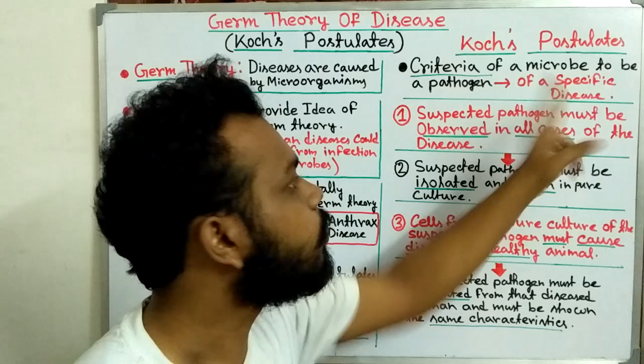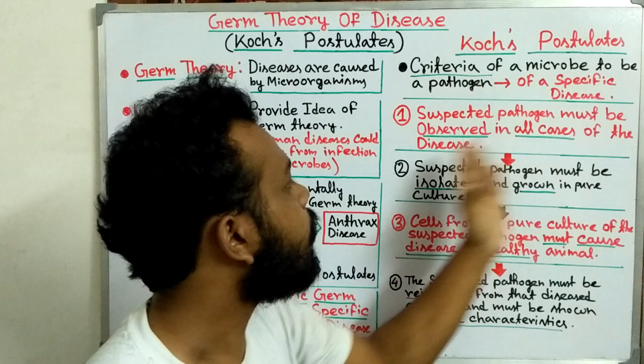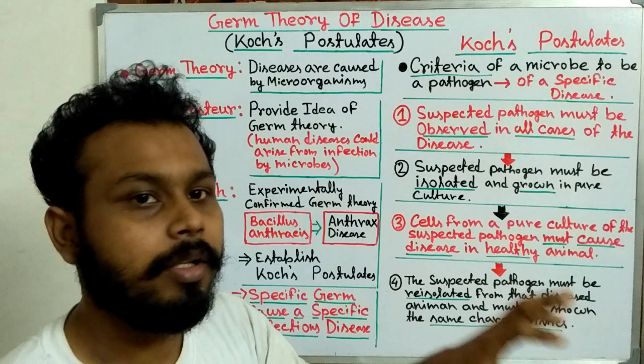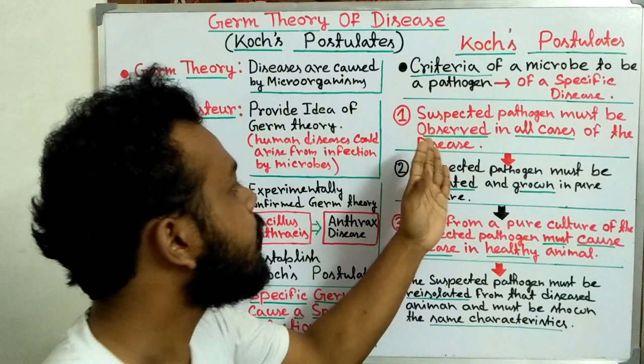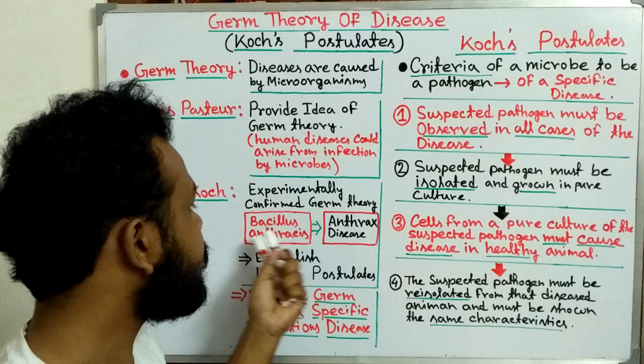The first criterion is: the suspected pathogen must be observed in all cases of the disease. That means from every diseased animal we must find the suspected pathogen. For example, if the disease is anthrax, then in all anthrax-diseased animals we must find the suspected pathogen, which is Bacillus anthracis.